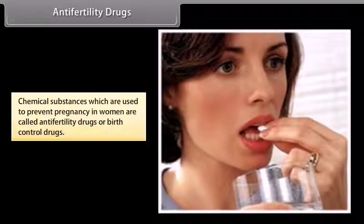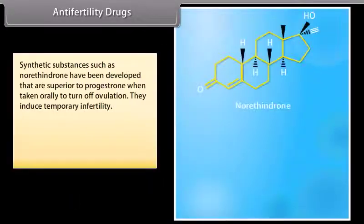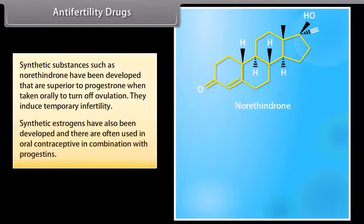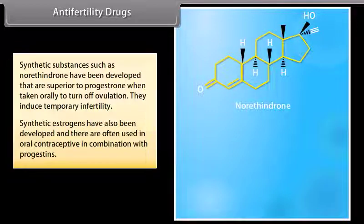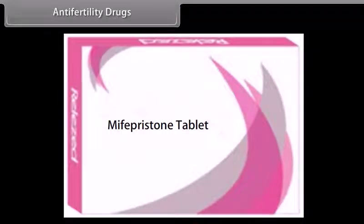Antifertility drugs: chemical substances which are used to prevent pregnancy in women are called antifertility drugs or birth control drugs. Progesterone is the most common natural example. Synthetic substances such as norethindrone have been developed that are superior to progesterone when taken orally to turn off ovulation and induce temporary infertility. Synthetic estrogens have also been developed and are often used in oral contraceptives in combination with progesterone. A very potent synthetic estrogen is ethinyl estradiol. Mifepristone is a synthetic steroid that blocks the effects of progesterone and is used as a morning-after pill in many countries.